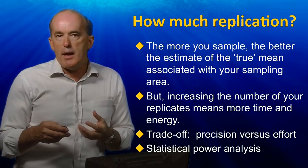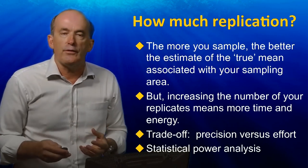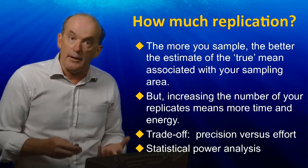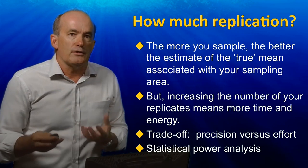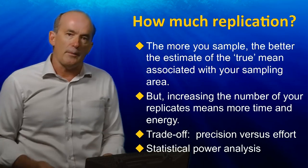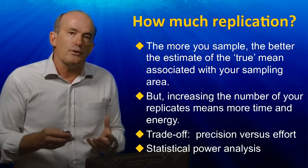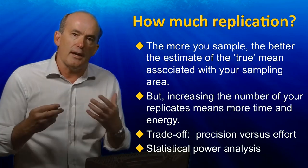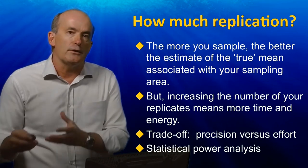There is an important relationship between the amount of replication and the precision of your measurement system. The more replicates you take, the better the estimate you have of the theoretical mean associated with each of the two areas you are studying. Clearly, however, the more replicates you have, the greater the time and expense of your study. There is an important trade-off between increasing the precision of your measurements versus the time and costs associated with increasing the number of replicates. There are techniques that can help you make a decision here, one of which is called a statistical power analysis. Given the introductory nature of this course, we won't go further with this topic, except to note that there is an important trade-off between the precision and the time and effort that you put into achieving it.